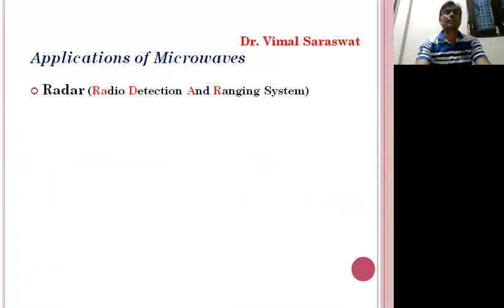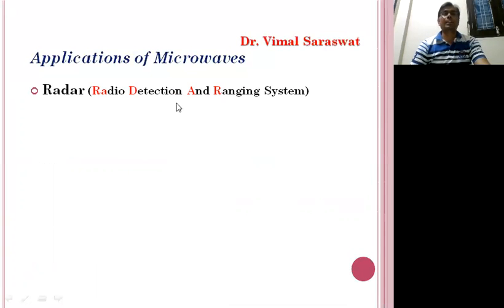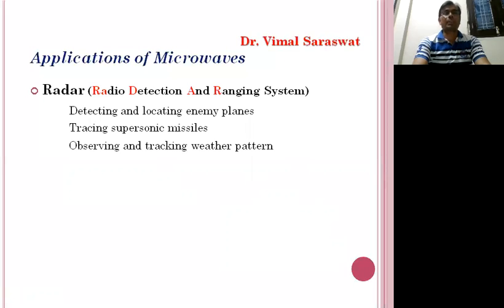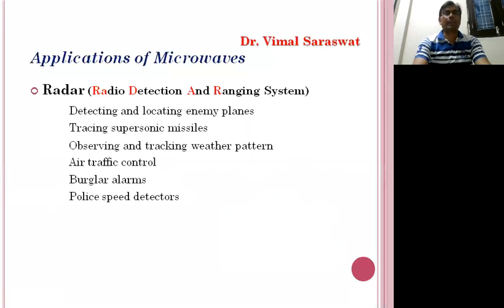The next application is radar. Microwaves are also used in radar. The full form of radar is Radio Detection And Ranging system. Radar is used for detecting and locating enemy planes, tracing supersonic missiles, observing and tracking weather patterns, air traffic control, burglar alarms, and police speed detectors.